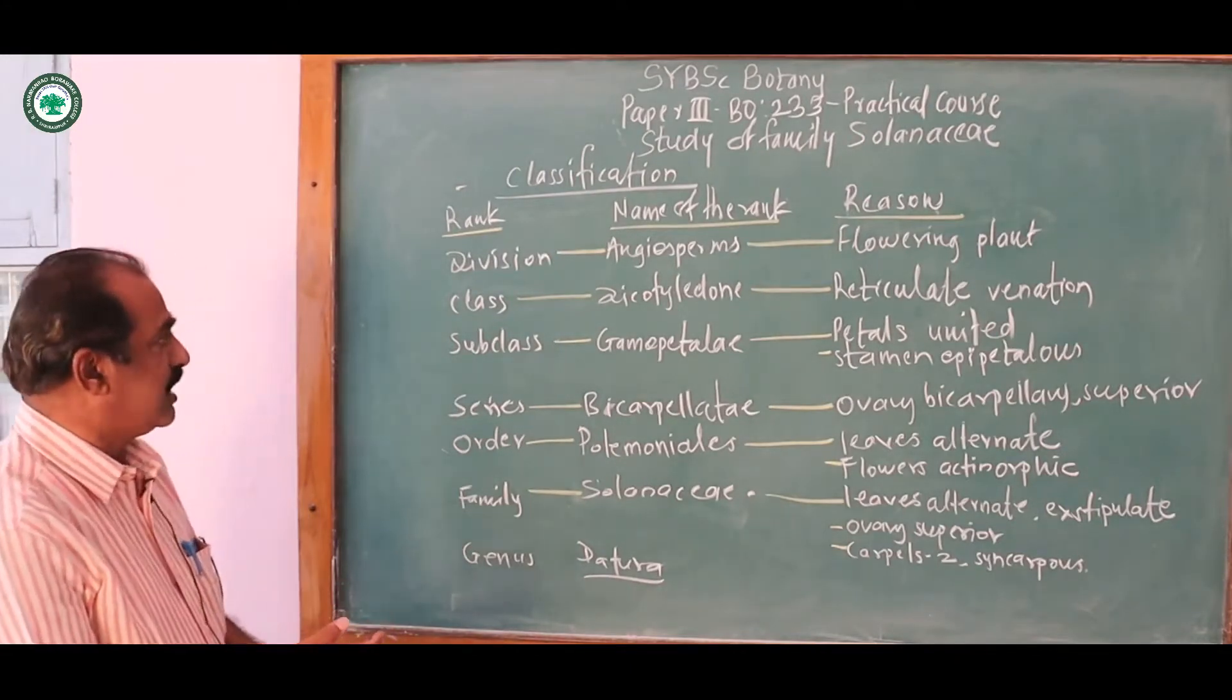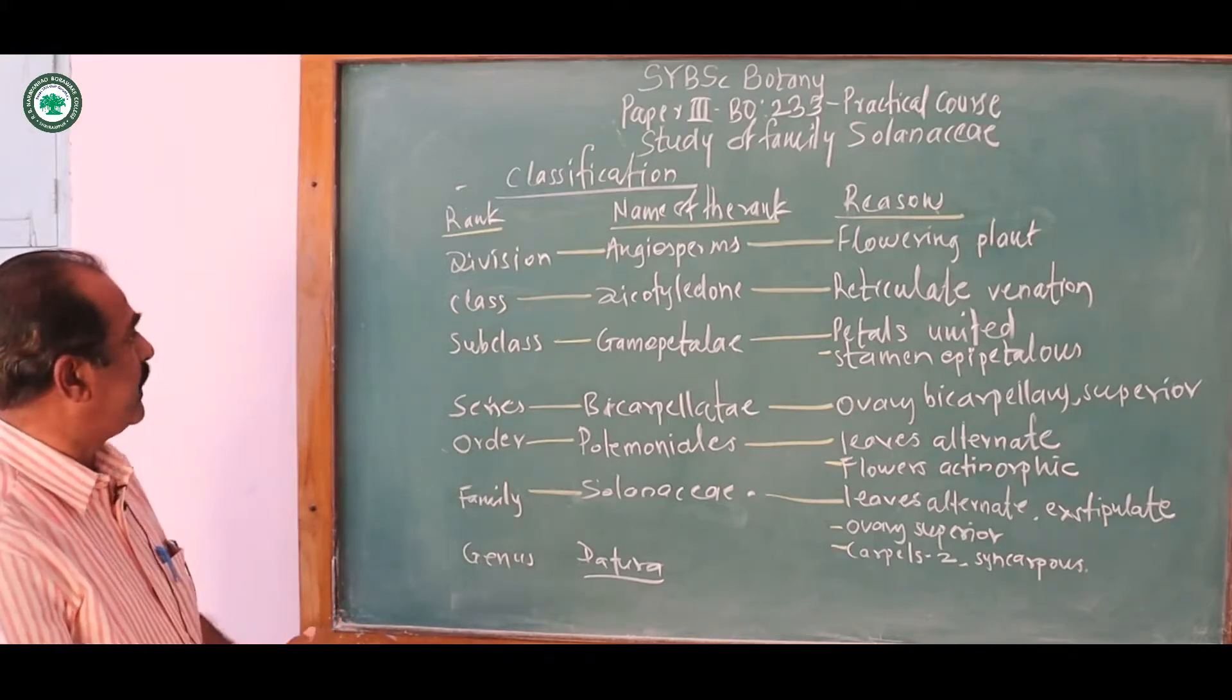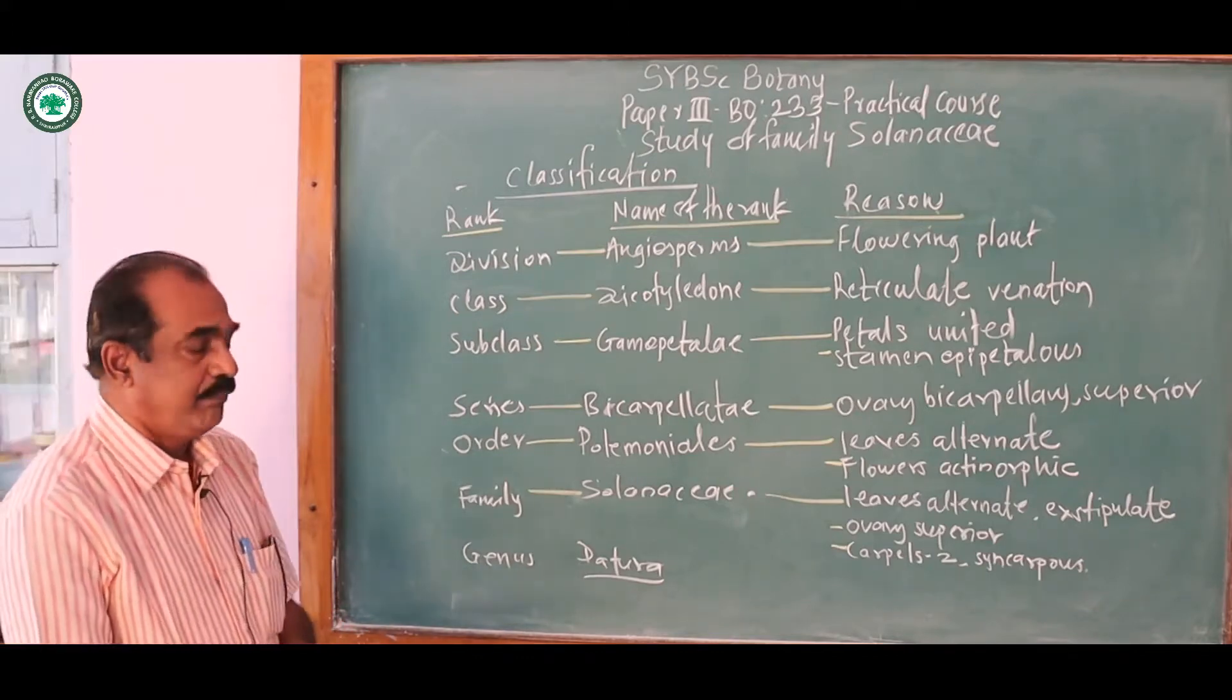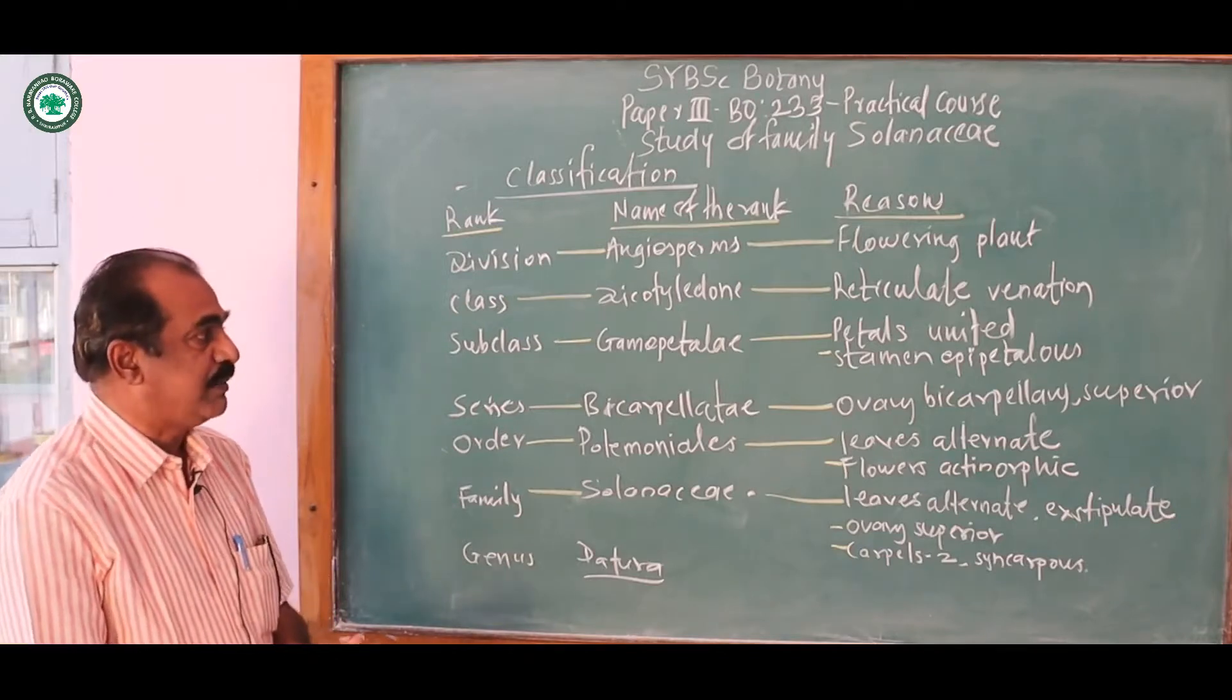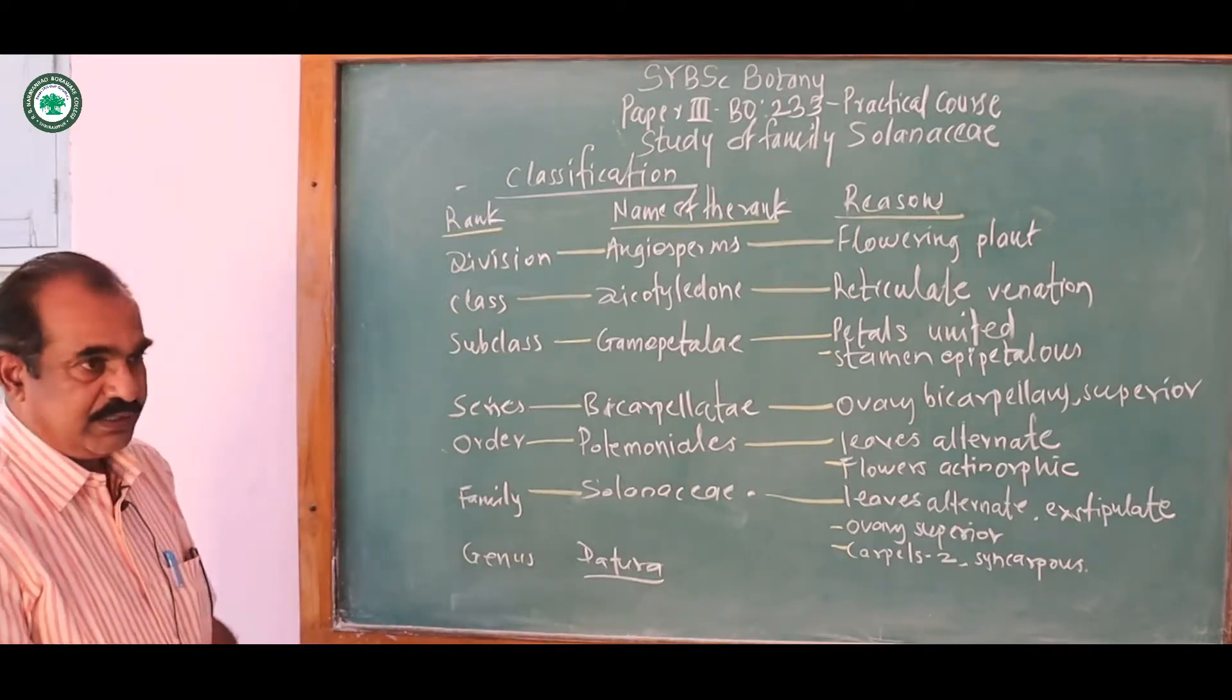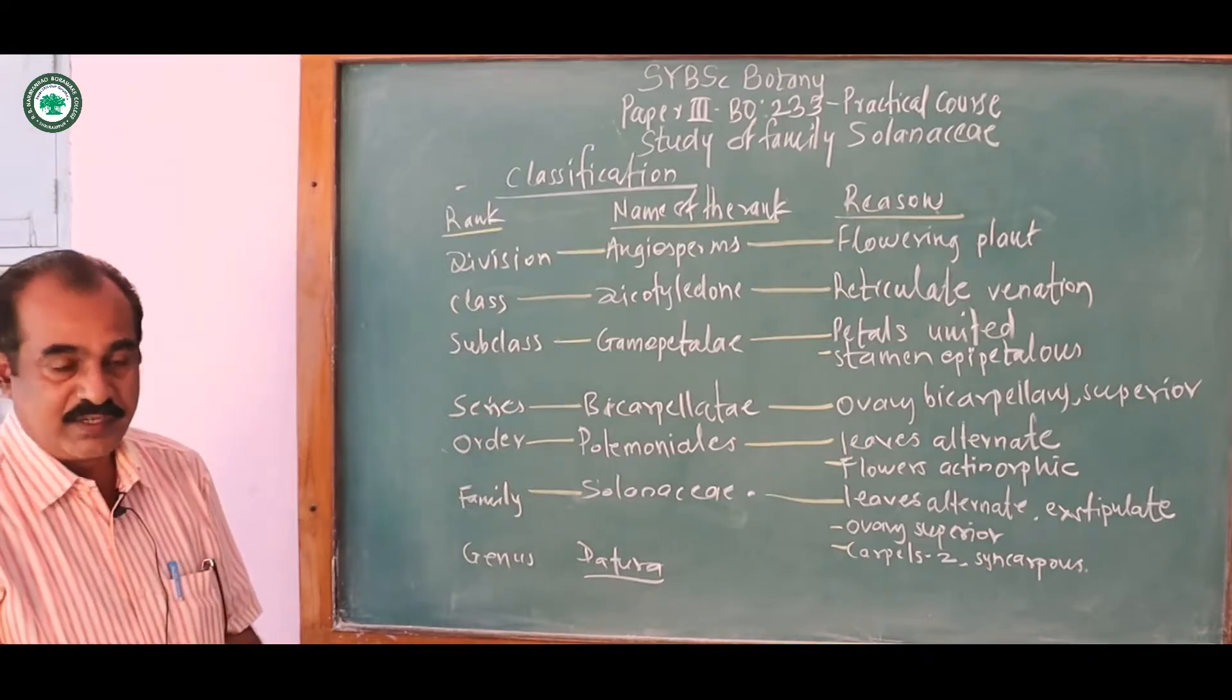Then class dicotyledon, reticulate venation is there. Then subclass gamopetalae, petals are united, stamens epipetalous, series bicarpellate.